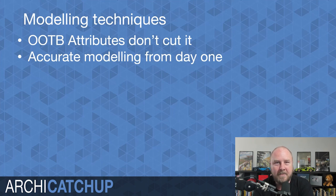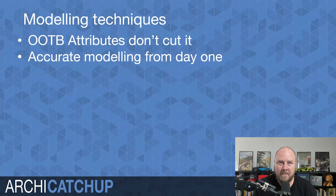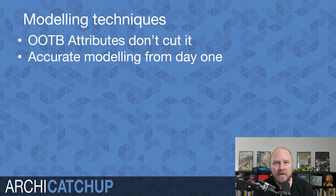Accurate modeling from day one — everything modeled so that you're actually working to real dimensions. Don't go modeling things at 89 degrees or 89.9 degrees; you've got to model things accurately dimensionally. If you don't, you'll end up having to remodel everything, so you're not going to gain the benefits of utilizing your concept design model if you model inaccurately from day one.